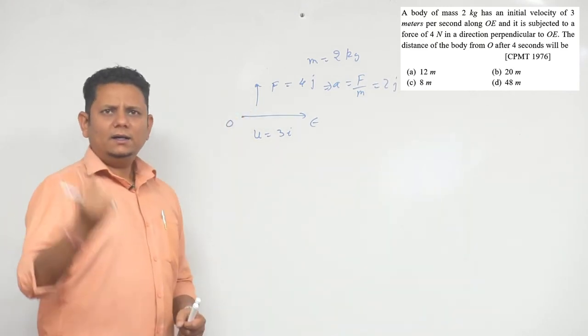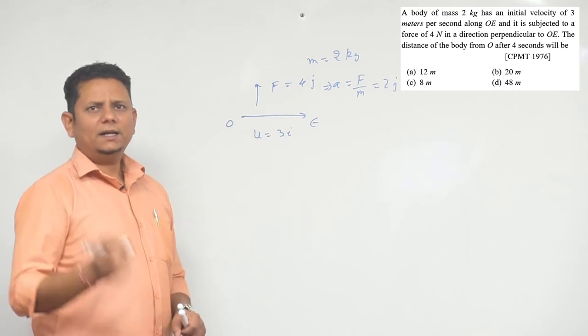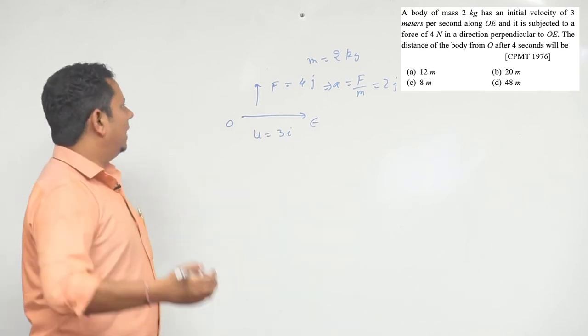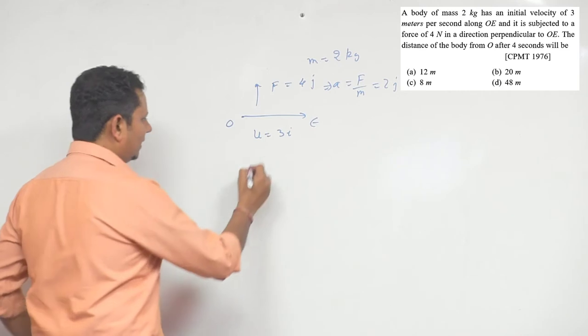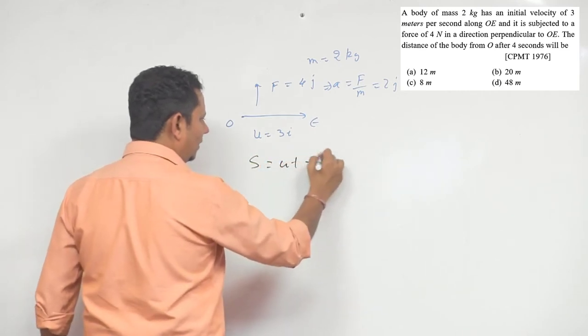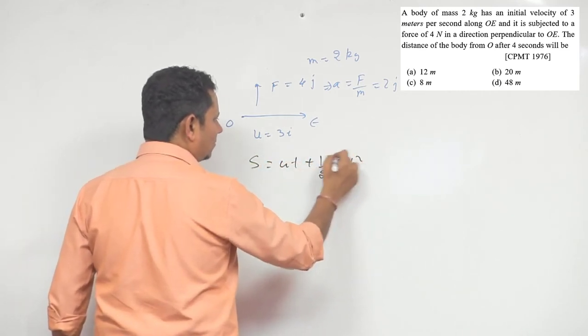Now, we need to find the distance traveled. So here we can use the second equation of motion, which we call s equals ut plus half at square. Notice that s, u, and a, all three are in vector form.